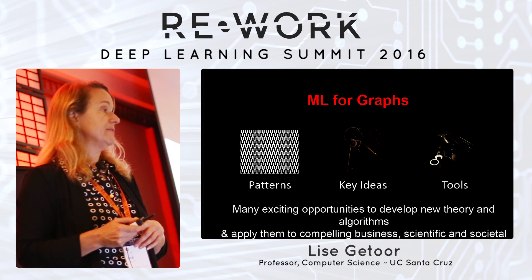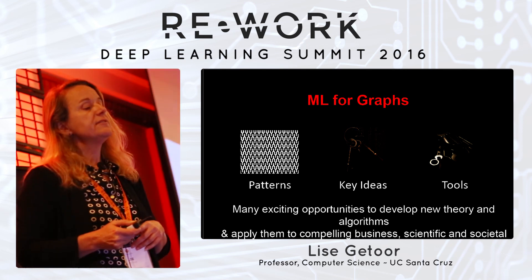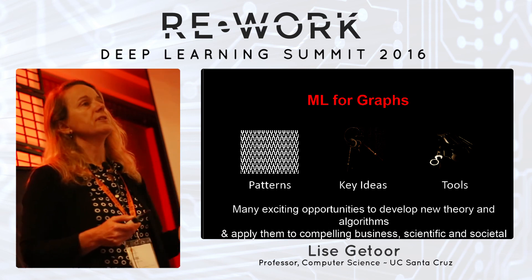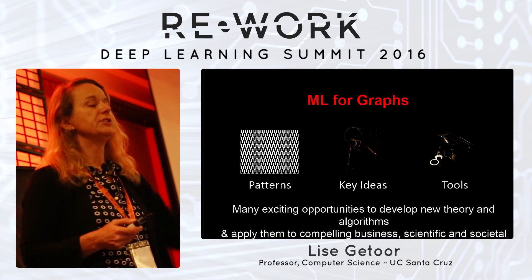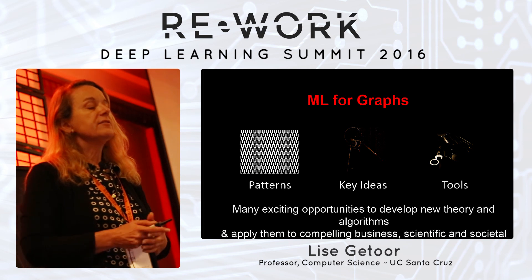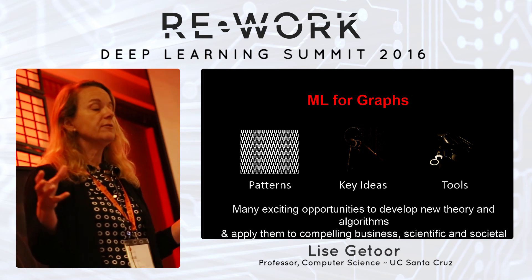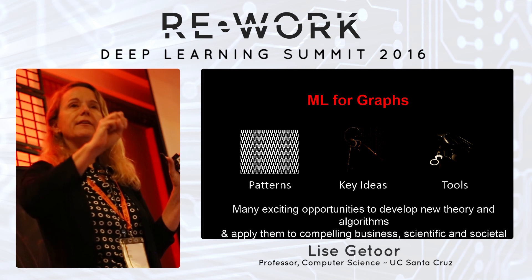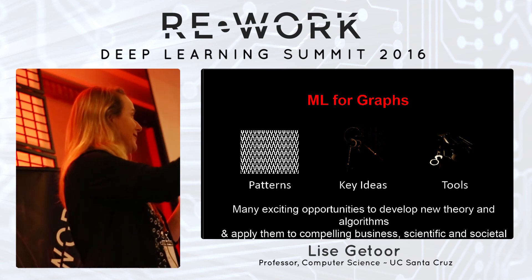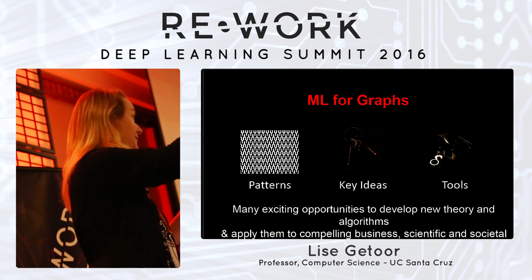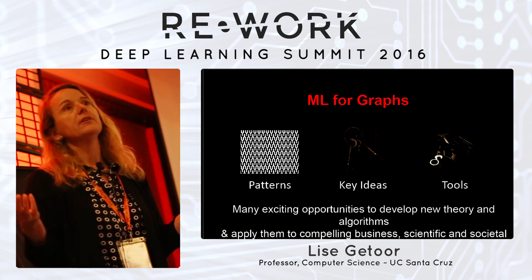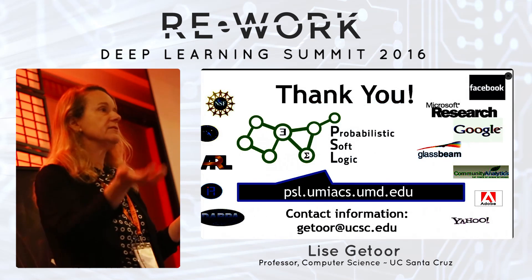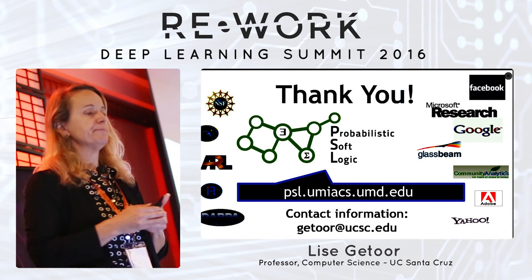To summarize: we really need methods that can deal with structure in the data. When I say graphs, I'm thinking of richly structured graphs. There are opportunities for new theory and algorithms for models that take into account structure, and connecting those to models that infer structure from the data. Many of the upcoming opportunities in AI are exactly at this boundary of mixing structured and unstructured data. Thanks.